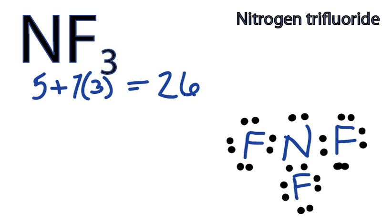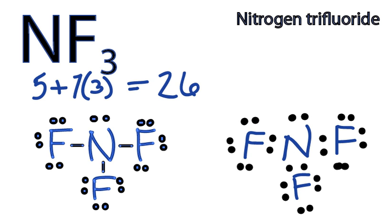So our Lewis structure is done, and we could also draw it as a structural formula, and that would look like this right here. That is the Lewis structure for NF3.